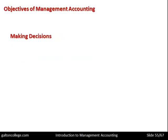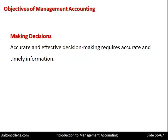Accurate and effective decision making requires accurate and timely information. If that is not the case, decision making may be flawed or even dangerous — it could be dangerous for the continuance of the business, and the business may fail as a consequence of bad decision making. So accurate and timely information is important.